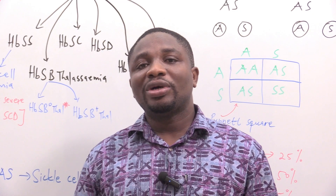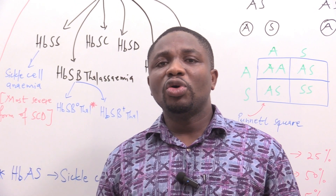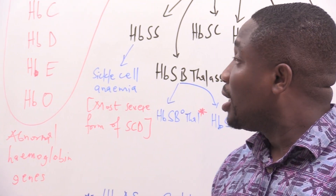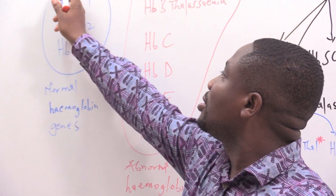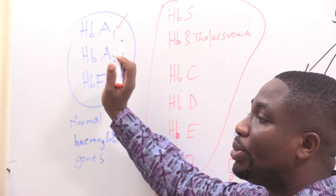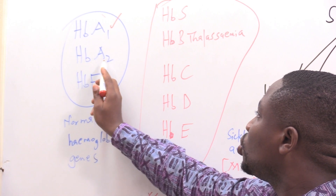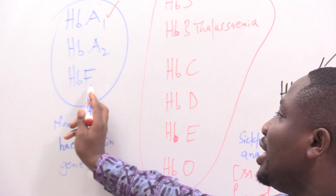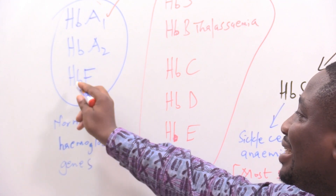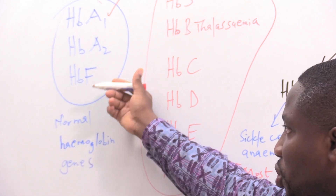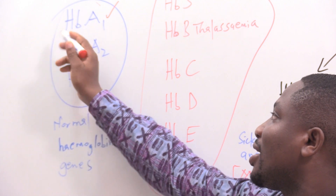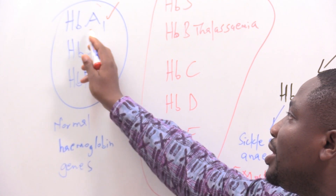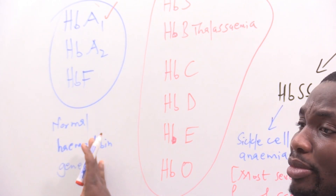First of all, let's look at the genes that code for the various hemoglobins. There are three types of normal hemoglobin coded for by genes. We have HbA1, which is the most common — the adult hemoglobin. We have HbA2, which is a variant not so common in the adult population. Then we have HbF, the fetal hemoglobin, popular in fetuses and young children. So HbF, HbA2, and HbA1 are the normal hemoglobin genes.